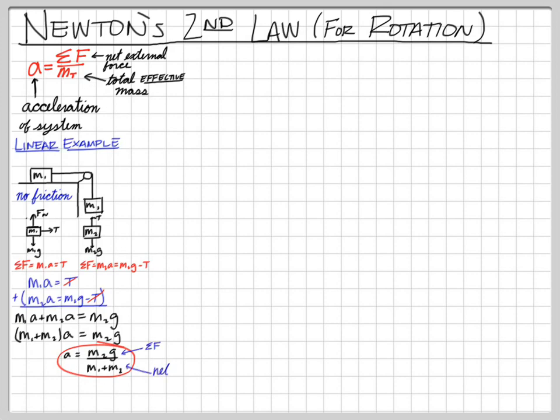On top we have the net external force — the weight pulling on the whole system, the only non-internal force. On the bottom we have the total effective mass. I want you to think of these things as net force over net effective mass, because that's going to play a role with rotating objects.